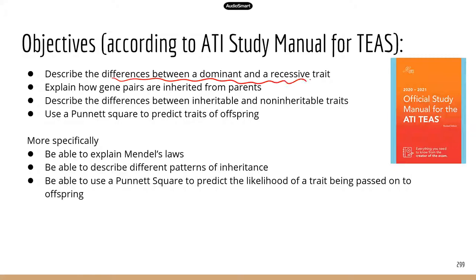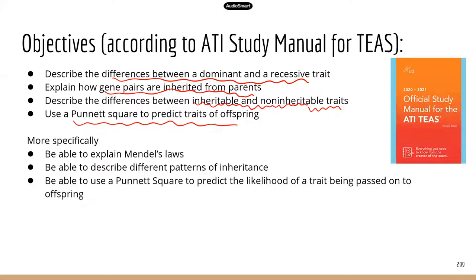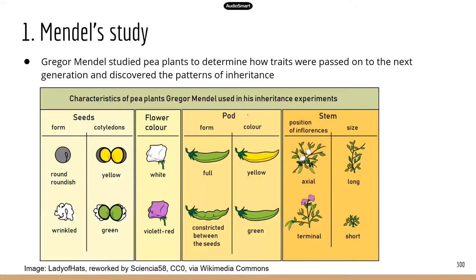For example, you need to know the differences between a dominant and recessive trait — that's usually pretty easy to understand. You also need to be able to explain how gene pairs are inherited from parents. You also need to know the differences between inheritable and non-inheritable traits. Most importantly, you need to know how to draw a Punnett square and use it to predict traits of offspring based on the parents' genotypes or phenotypes, including the percentage in offspring.